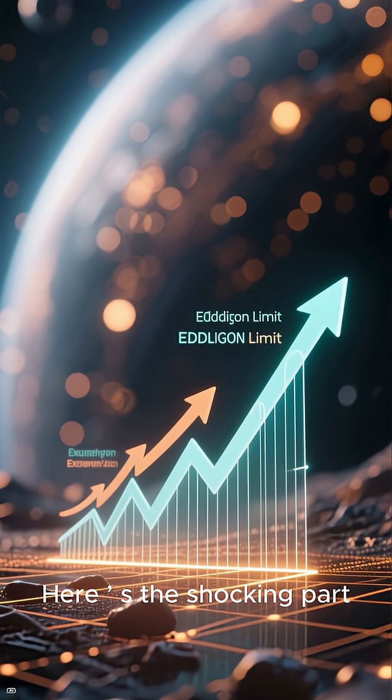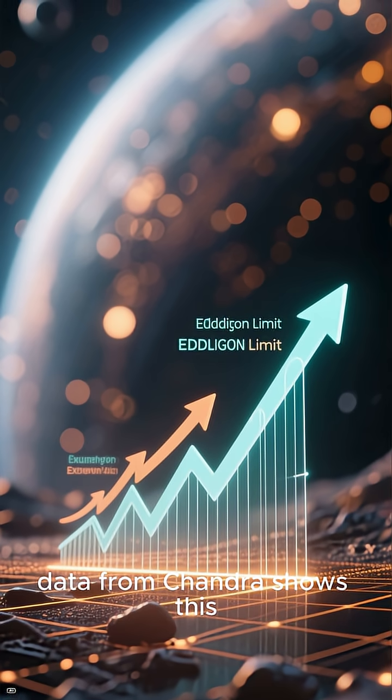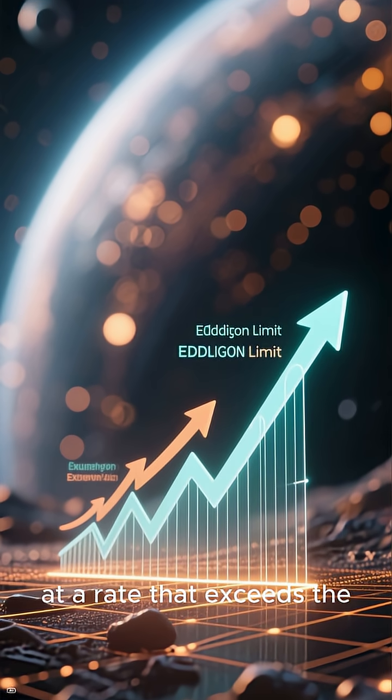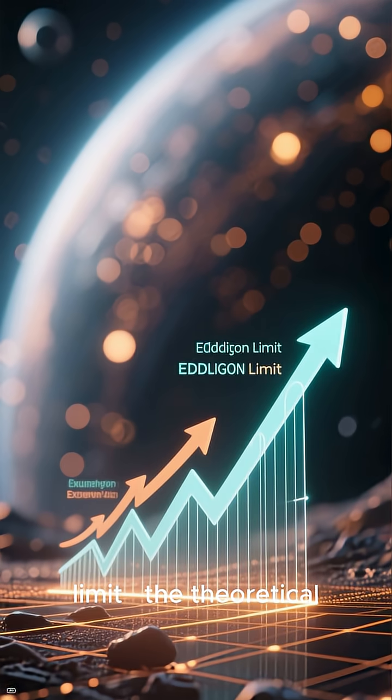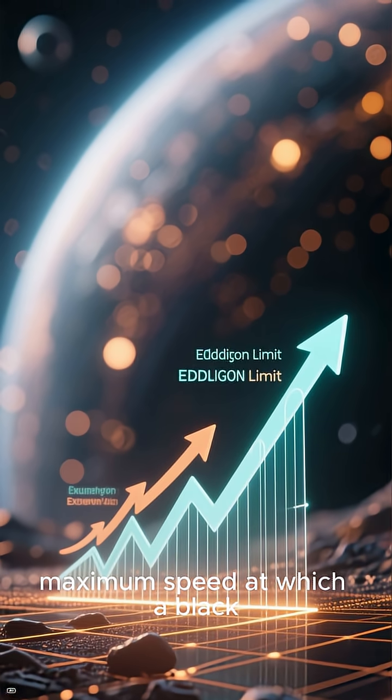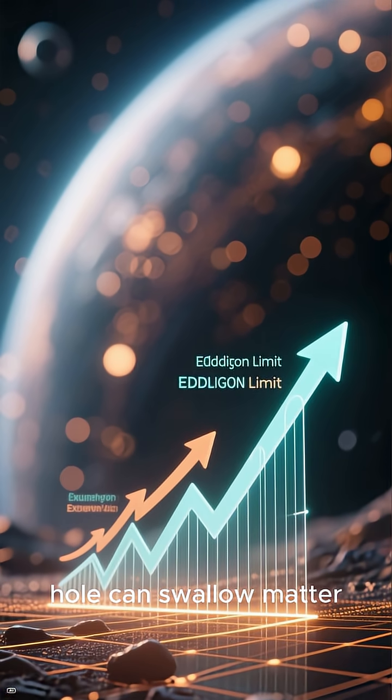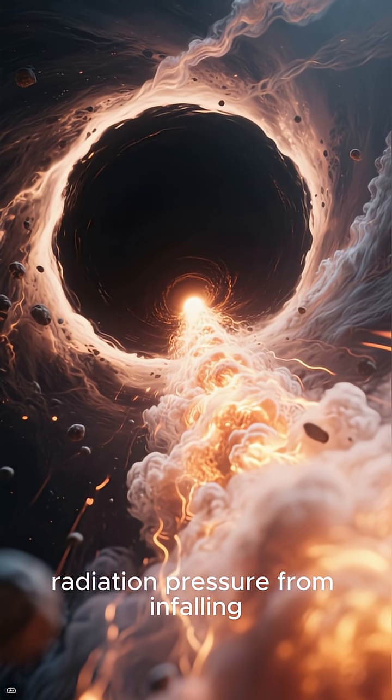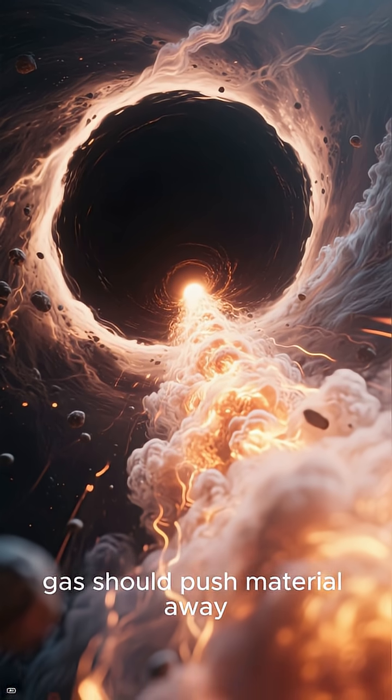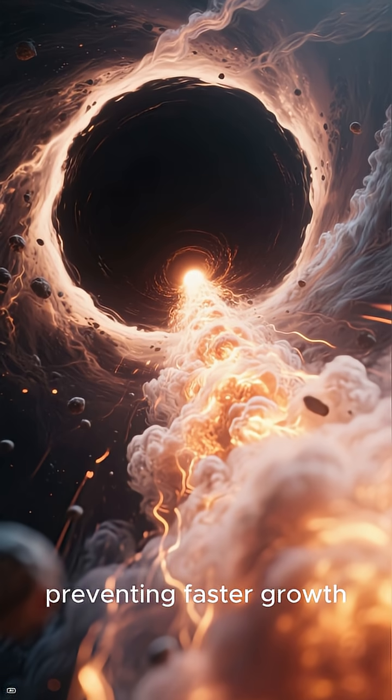Here's the shocking part. Data from Chandra shows this black hole is growing at a rate that exceeds the so-called Eddington limit, the theoretical maximum speed at which a black hole can swallow matter. Normally, radiation pressure from in-falling gas should push material away, preventing faster growth.